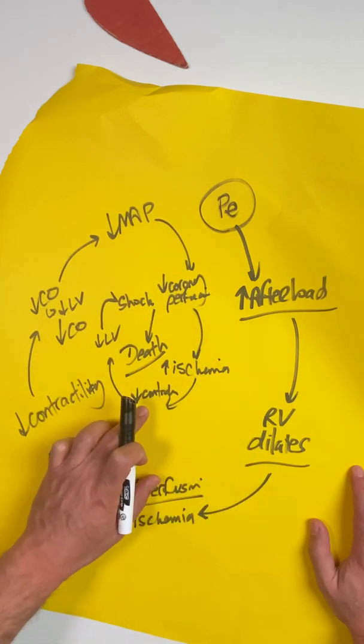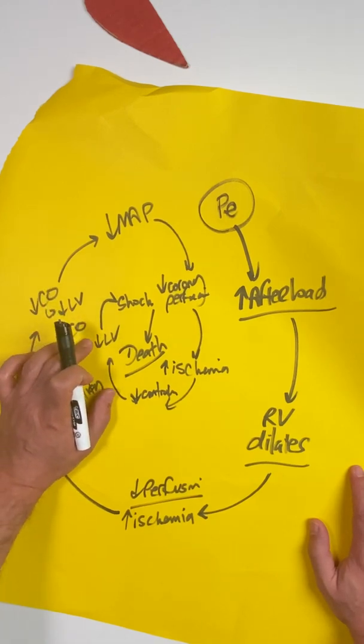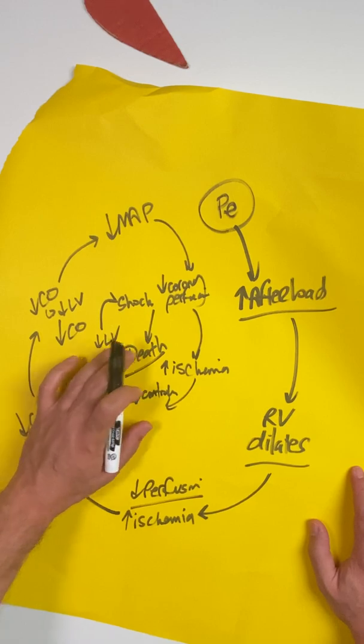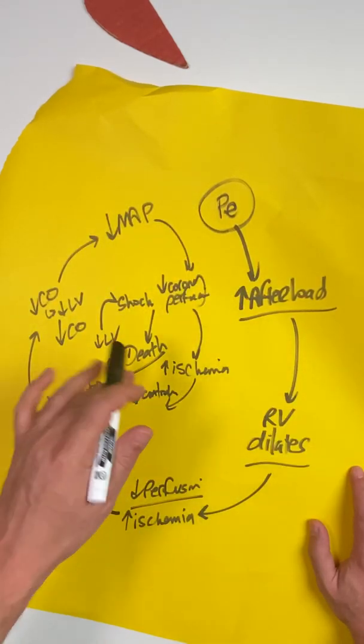This leads to further decreases in contractility, which leads to decreases in filling and decreases in cardiac output of your left ventricle, which leads to shock and leads to death. Don't forget about the RV death spiral. Very important to keep in mind as you're resuscitating these patients.